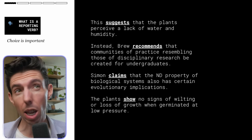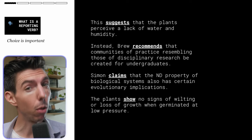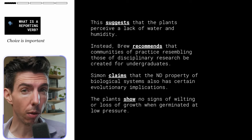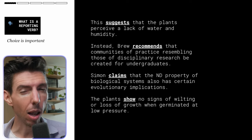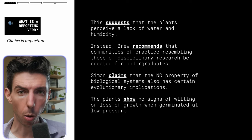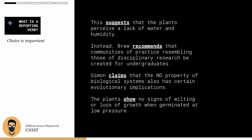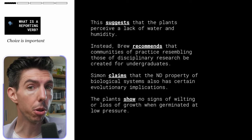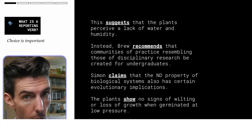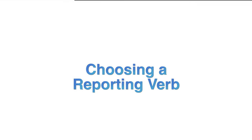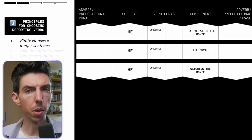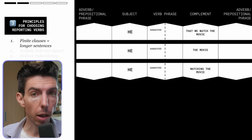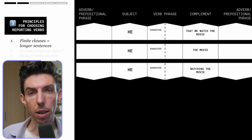Your choice of reporting verb shows your relationship to that information, so it's quite important. Here we have the four most common reporting verbs in academic writing — pause here and take a moment to look at them. Suggest, recommend, claim, and show — those are the ones you want to become most familiar with. When you have all these different reporting verbs, it becomes tricky to choose, so there are basically three rules you can follow to help you make the right choice.